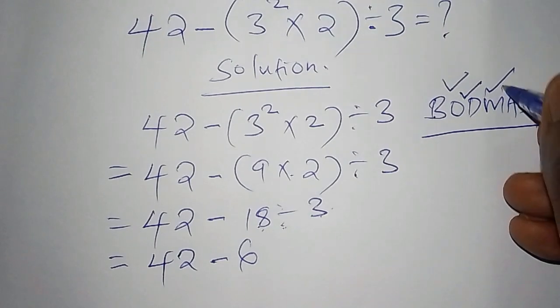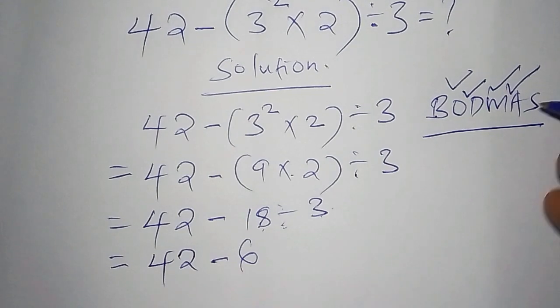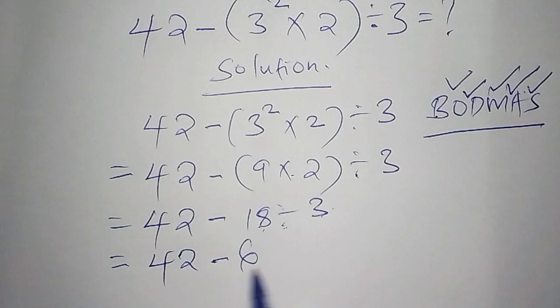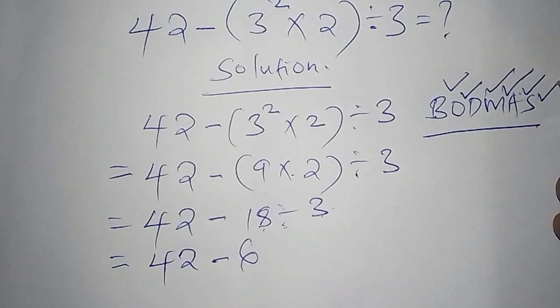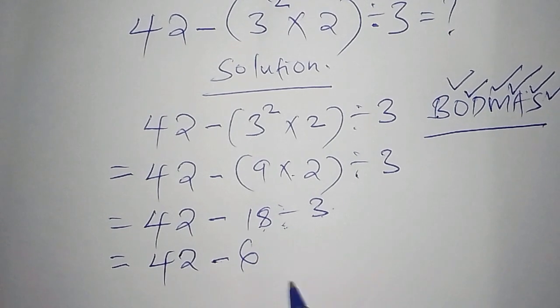We are moving to the next step. That is multiplication. There is no any multiplication here. Then we are moving to the next. That is addition. There is no addition here. Then our last one, but not least, is subtraction. So we need to subtract 42 minus 6.